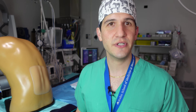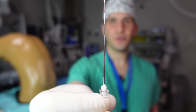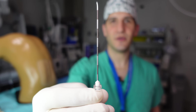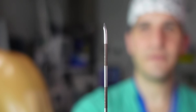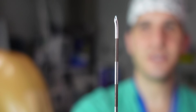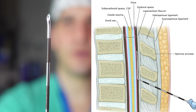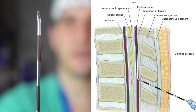Once the local anesthetic is in place, we go ahead and start inserting the 17 gauge Tuohy needle, which looks like this. You can appreciate how the Tuohy needle has markings every centimeter so that we can keep a very close eye on how deep this needle has gone. One of the really important features of this needle is the special tip, which is designed to allow the passage of a plastic catheter up into the epidural space and not continue forward.